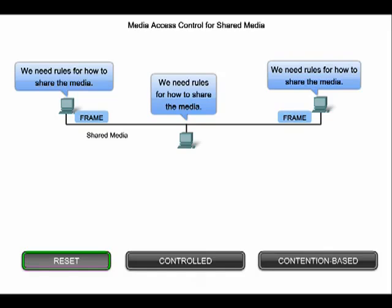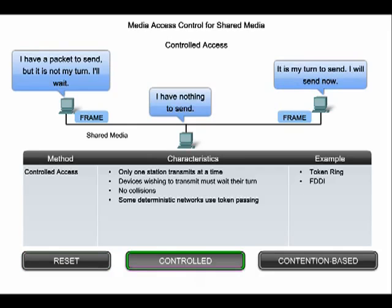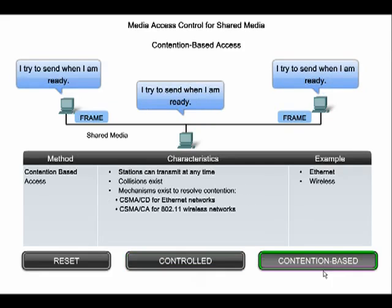Media access control is the equivalent of traffic rules that regulate the entrance of motor vehicles onto a roadway. In controlled access networks, such as some wireless LANs, only one device can transmit at a time, and the media access control layer follows the rules necessary to put traffic onto this type of network. In contention-based networks, such as Ethernet, the rules for putting data onto the network are different, but the media access control sub-layer assures this happens correctly.